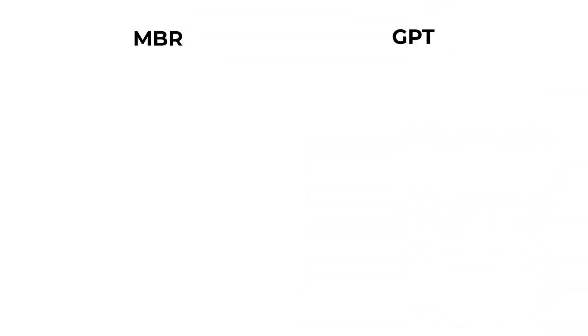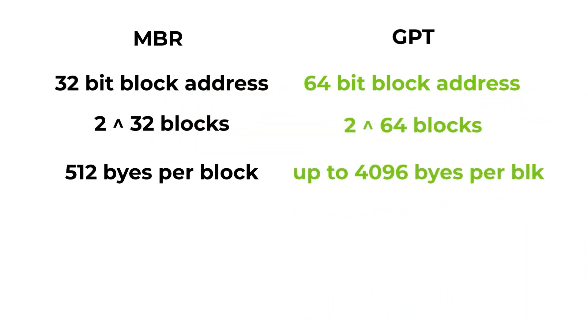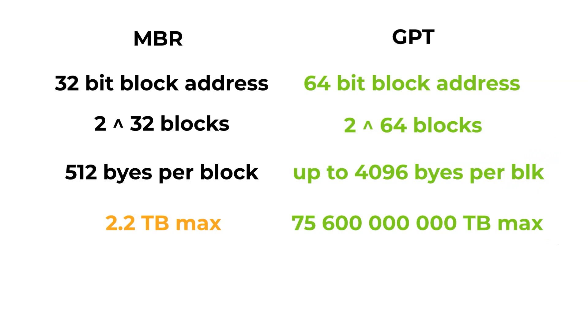GPT drives also remove the limitations of MBR. Master Boot Record was created when something like a one-gigabyte hard drive was deemed massive. Comparing MBR and GPT: each disk is divided into blocks. MBR uses a 32-bit address for blocks, whereas GPT uses 64 bits — giving us 2 to the power of 32 blocks on MBR and 2 to the power of 64 on GPT. Each block in an MBR disk can store 512 bytes, whereas GPT supports up to 4,096 bytes per block. Multiplying that out gives a maximum MBR disk size of 2.2 terabytes, whereas GPT comes in with a whopping 75.6 times 10 to the 9 terabytes — actually called a zettabyte. So we have 75.6 zettabytes, which is a lot of storage.